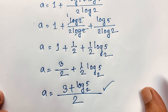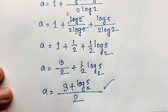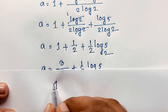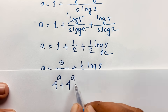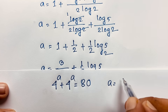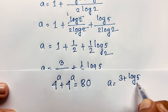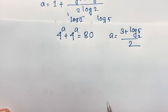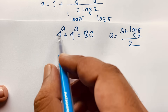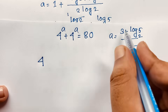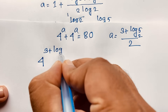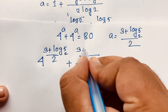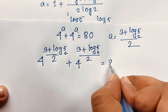In this exponential math question, the value of a is (3 + log₂5) / 2. Now let's verify. Our original question is 4 to the power a plus 4 to the power a equals 80, where a equals (3 + log₂5) / 2. Substituting, the left-hand side becomes 4 to the power (3 + log₂5)/2 plus 4 to the power (3 + log₂5)/2, and the right-hand side is 80.